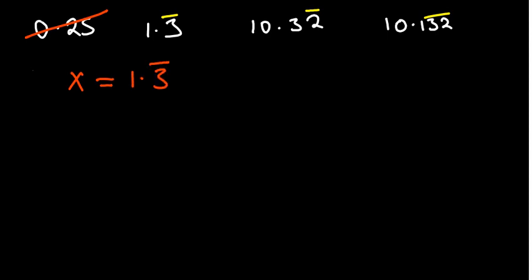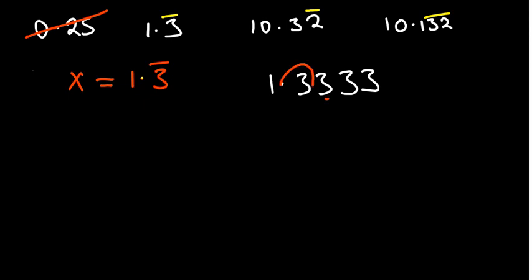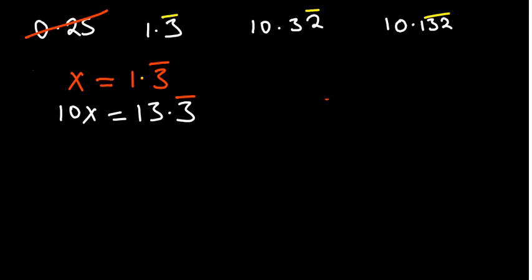The first step is to make sure only the recurring numbers appear on the right-hand side of the decimal point. In this case, we only have the recurring number after the decimal, so that's fine. We then move the entire recurring number across the decimal point by multiplying by 10. Since the 3 is recurring and never ends, multiplying by 10 gives 13 — but recurring digits continue. So multiplying both sides by 10 gives 10x = 13.3 recurring.